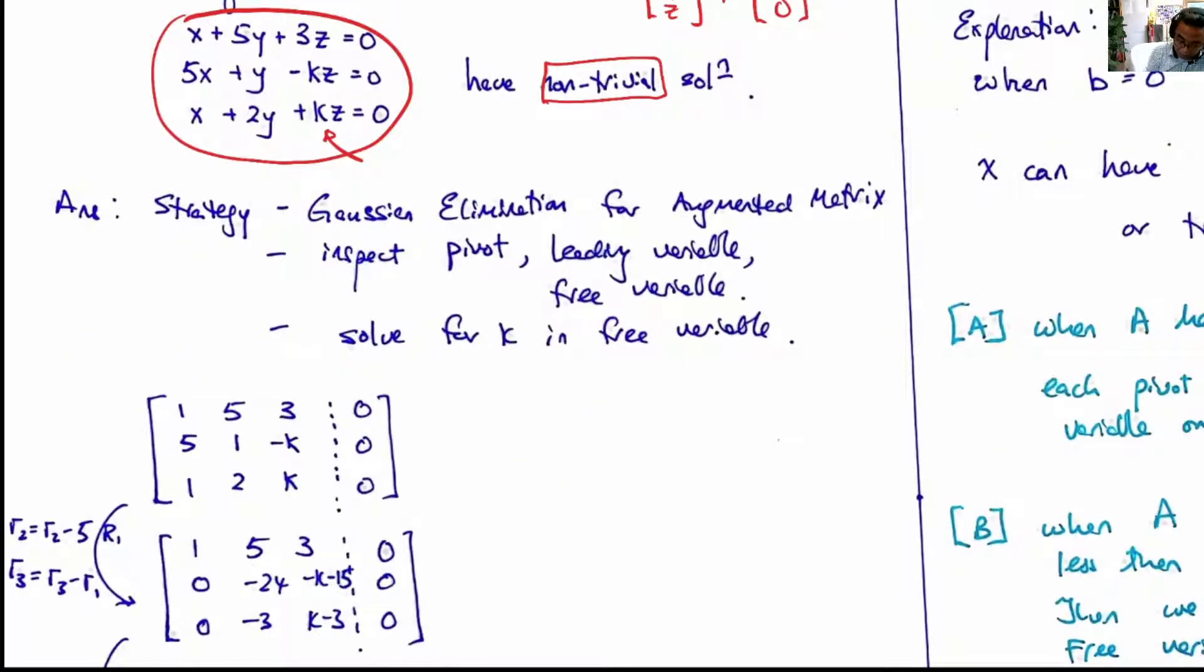The strategy to solve for k is to perform Gaussian elimination on the augmented matrix. If we call this matrix A,